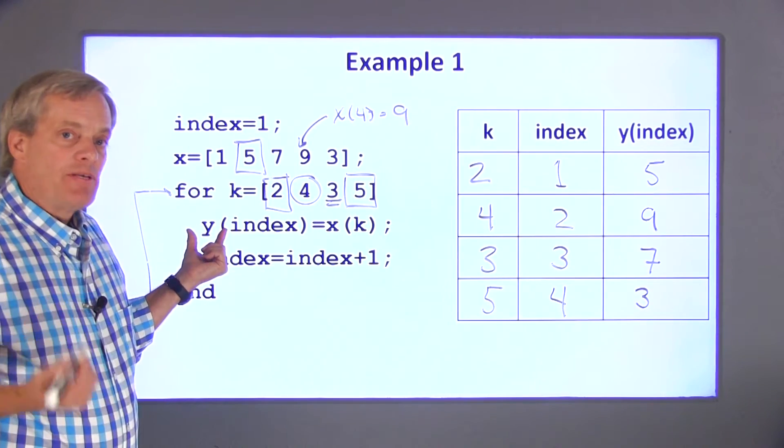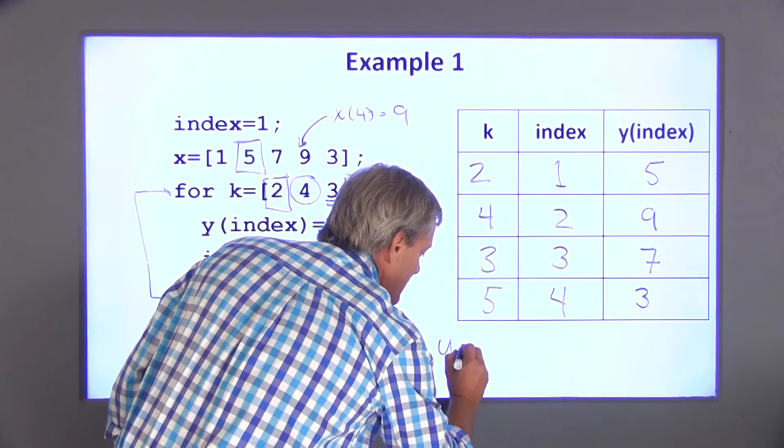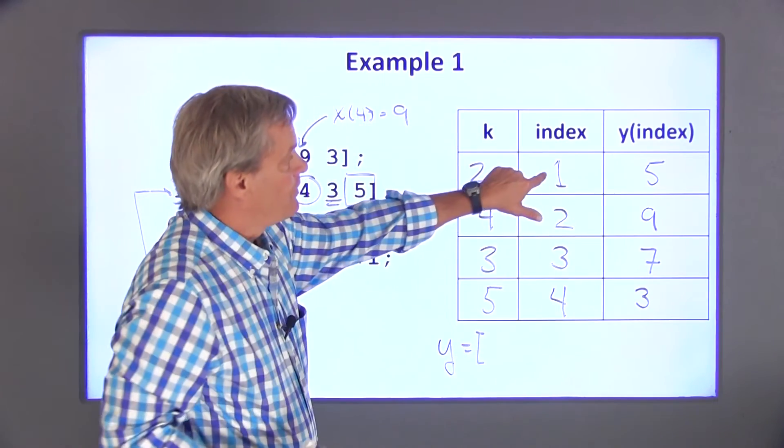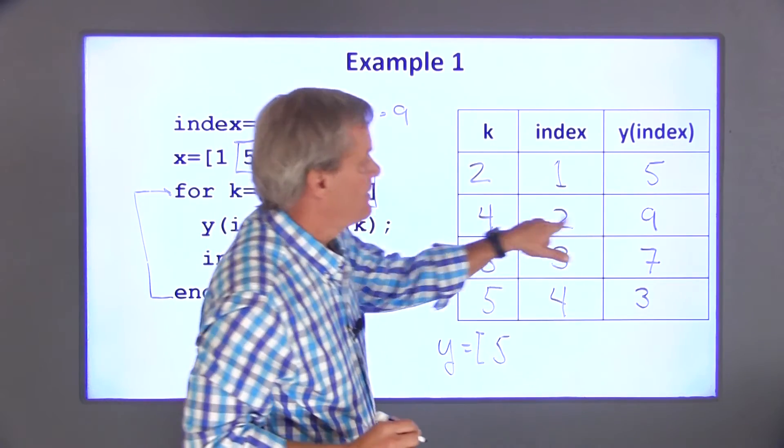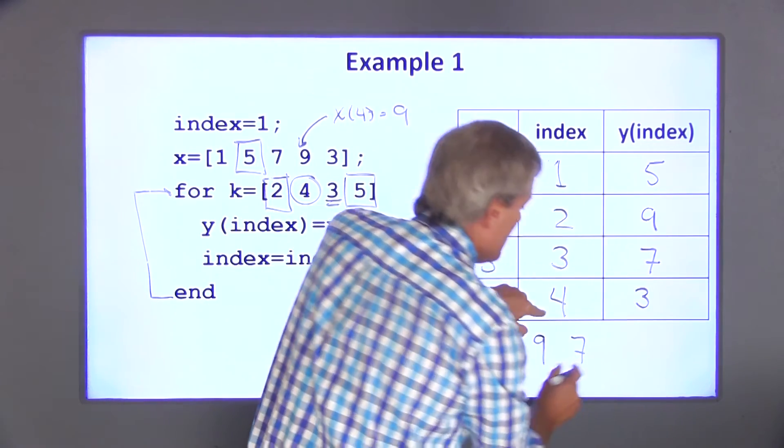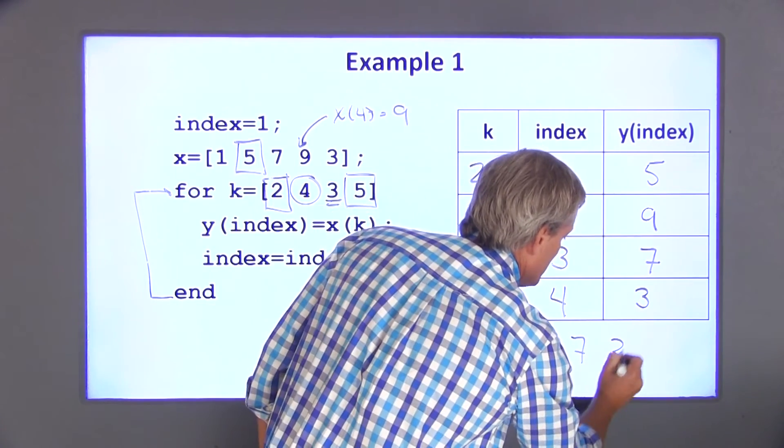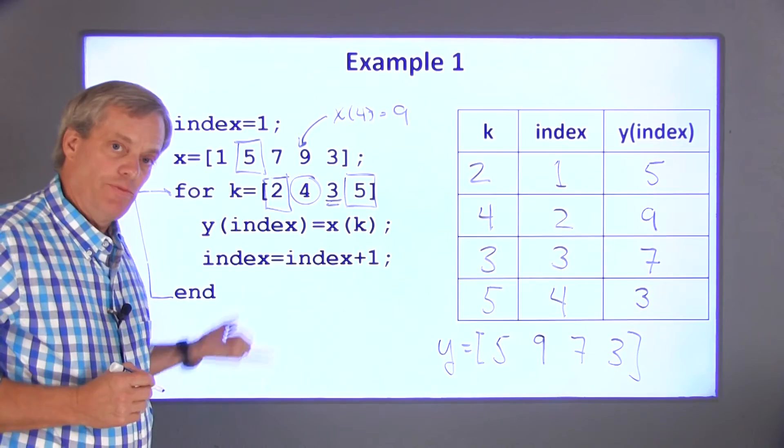y is actually set up as an array. We've got array locations here. So when all is said and done, the first element of y is 5. The second element of y is 9. The third element is 7. And the last element is 3. So this is the value of the variable y when the loop finishes.